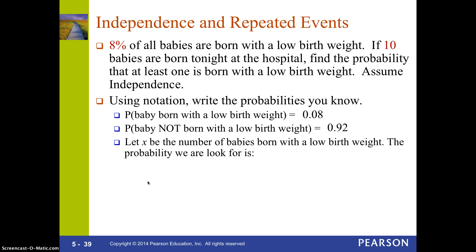Let X be the number of babies born with a low birth rate. The probability we're looking for is P(X ≥ 1). Since this involves repeated events and at least one, we use the complement rule: P(X ≥ 1) = 1 − P(X = 0), i.e., 1 minus the probability that none are born with a low birth rate.